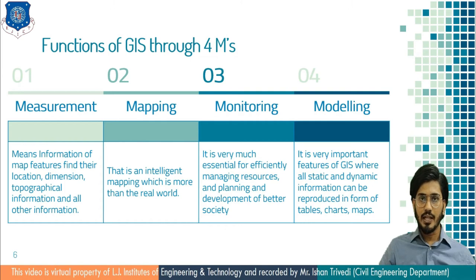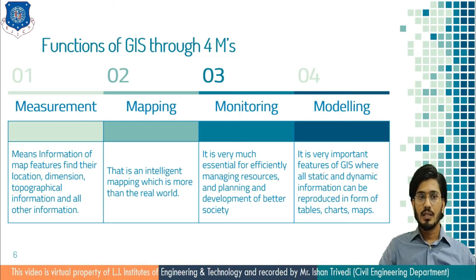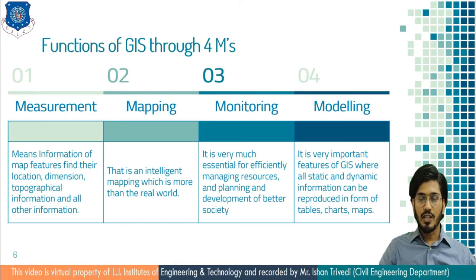Going into further detail, you get information in the form of municipality, local urban agglomeration, small towns, statutory towns, and so on. This will be bifurcated and fed into particular areas with minor detailing. The first M is measurement — the information of map features to find location, dimension, topographical information, and all other information including the area of any statutory unit or boundary of any town, and topographical and geographical features.